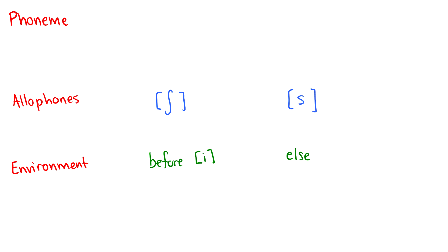So which is the phoneme? Well, the phoneme is the more general sound. It's the sound that occurs in the most places. And that would be s.